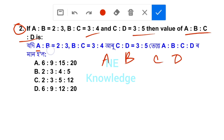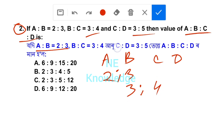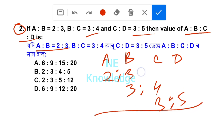A:B is 2:3. Next, B:C is 3:4. Next, C:D is 3:5. We need to find A:B:C:D, so we add 1 to each value.